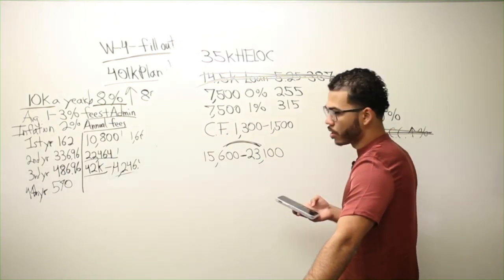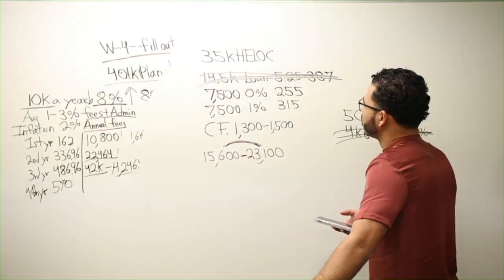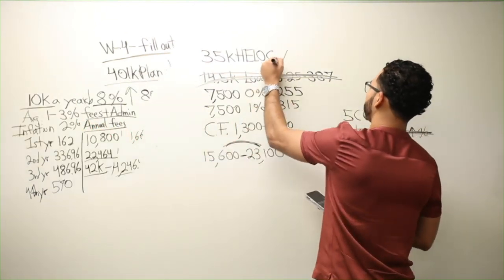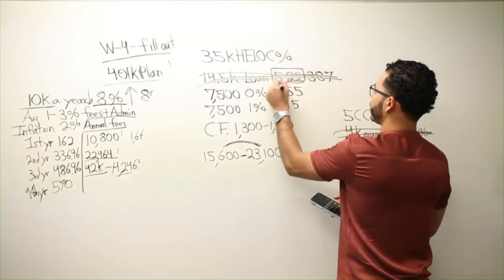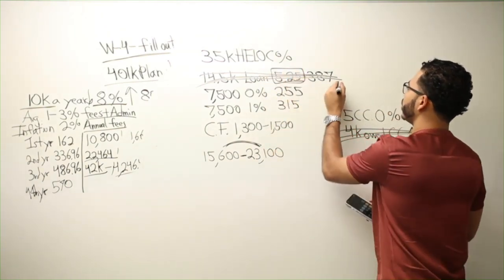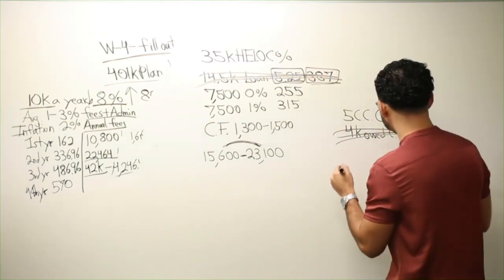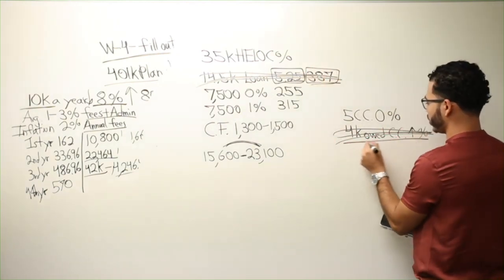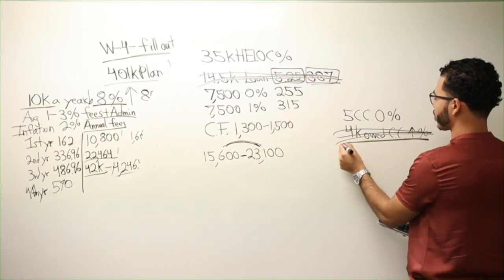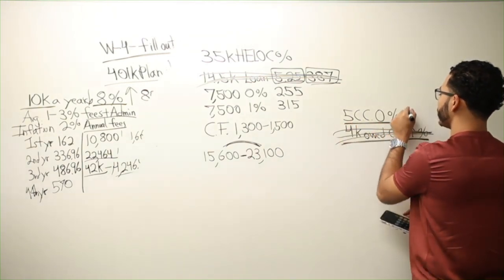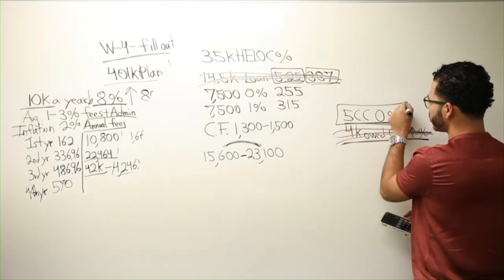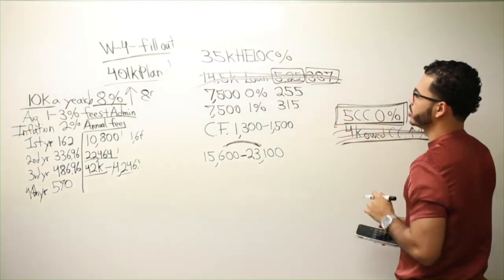So, the HELOC is at a what rate? At the HELOC, whatever the interest rate is on that would get offset by that 5.25 right there. And the cash flow gain right here. And then whatever I'm earning, saving over here.